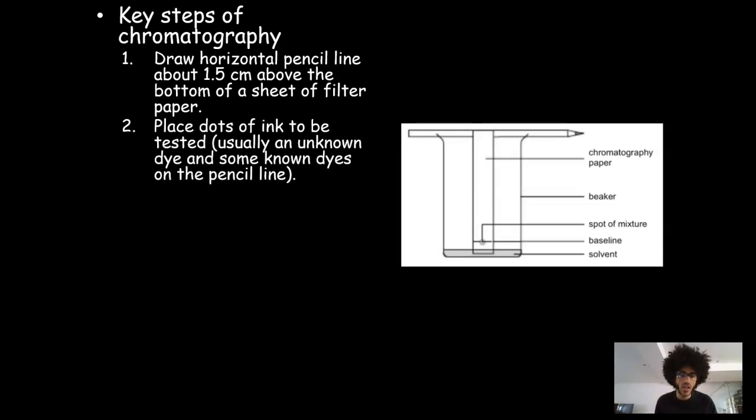And then you have to place your dots of ink to be tested. Usually chromatography is used to work out what is in an ink that you don't know what's inside it, and then chromatography can separate the different parts of that ink. So you have to put the dots of ink that you want to test, usually an unknown dye and then some known dyes that you suspect may be inside it. Typically in a chemistry lab, whether it's key stage 3 or key stage 4, you'll have red, yellow, and then maybe the unknown will be green or something.